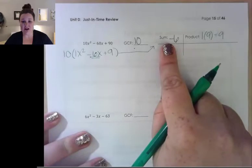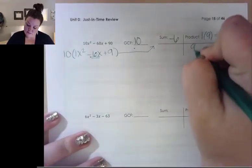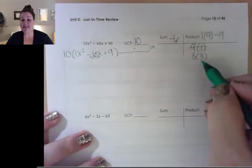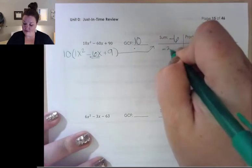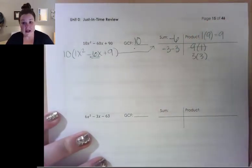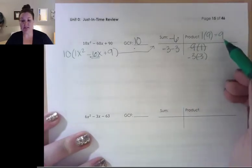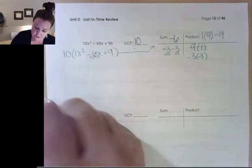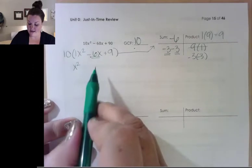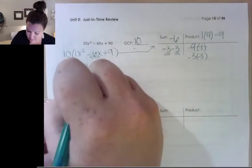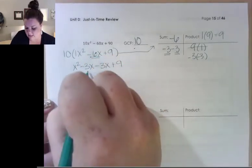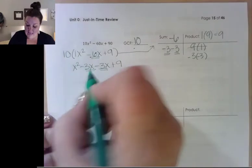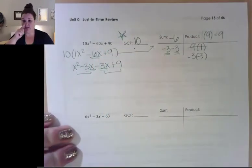My middle coefficient is negative 6, so that's my sum. My product is the first coefficient times the last: 1 times 9 equals 9. I need something that multiplies to give a product of 9 and sums to negative 6. I could do 9 times 1 or 3 times 3 — 9 and 1 don't give me 6, but 3 and 3 do. To get negative 6 I'd need negative 3 minus 3, and negative 3 times negative 3 still gives positive 9. I'll put a star to remind myself to include the 10 at the end.